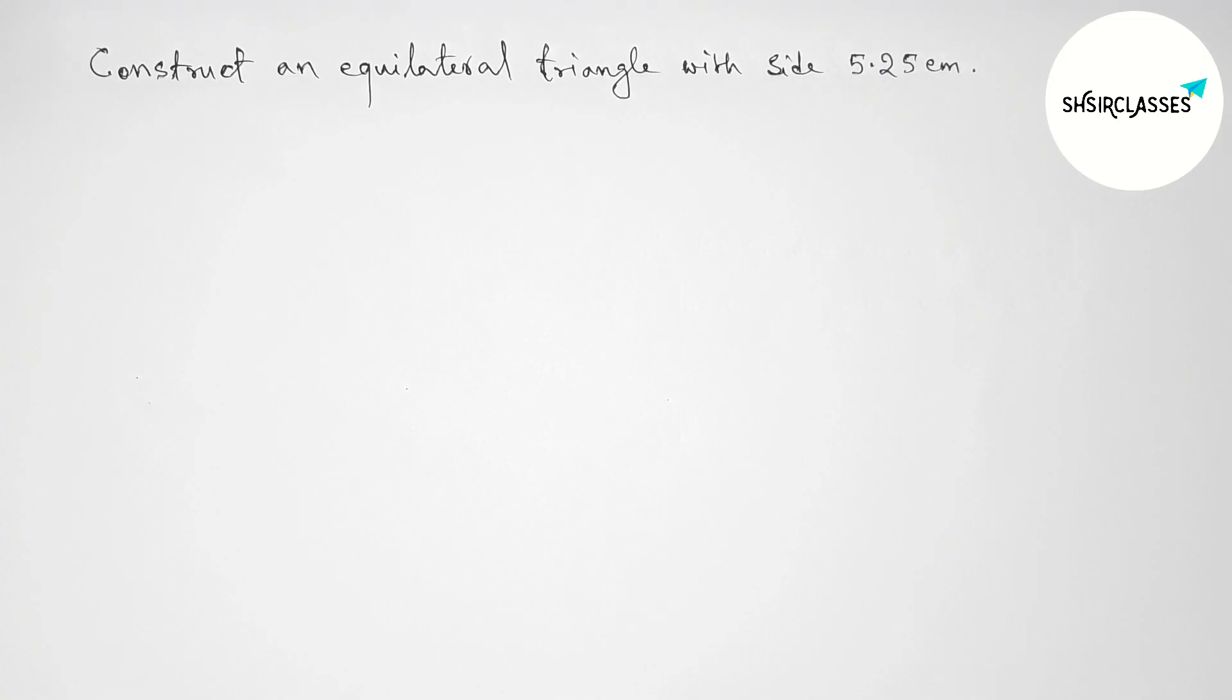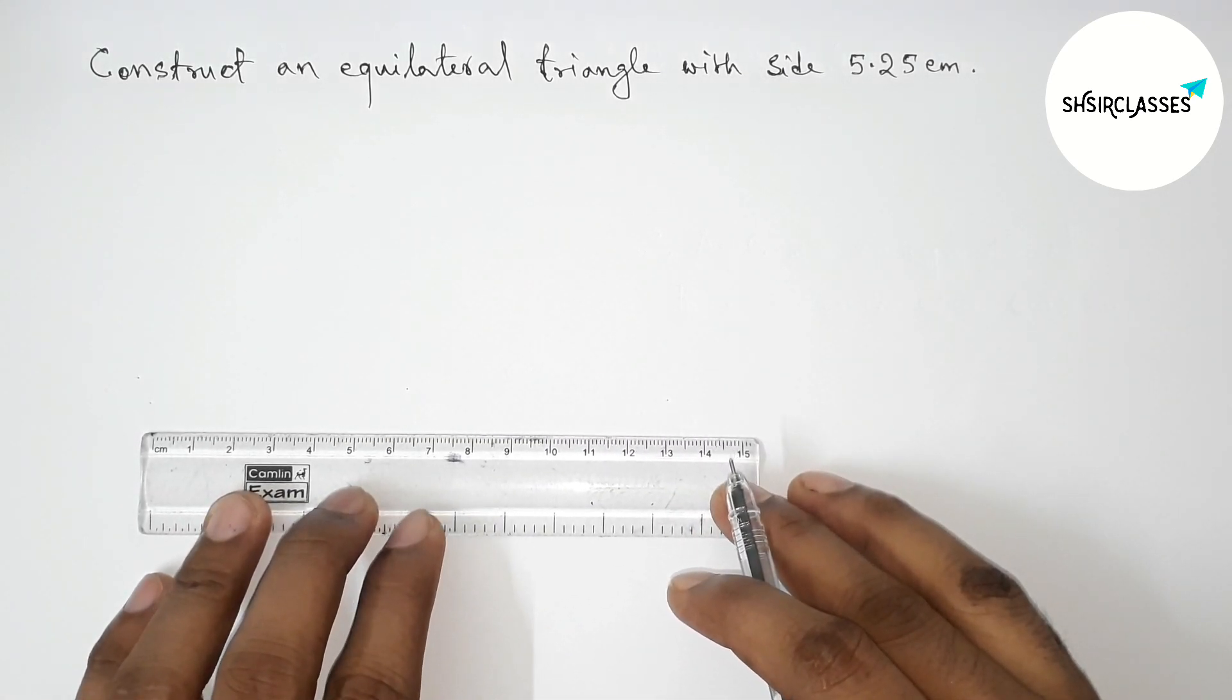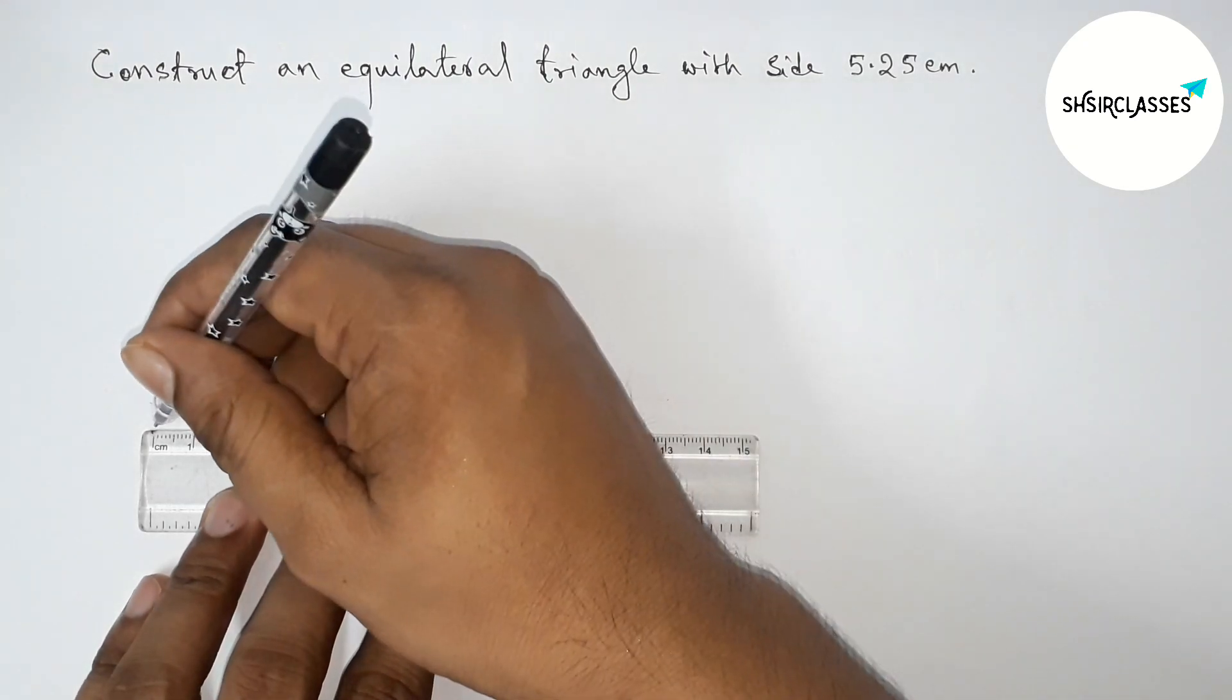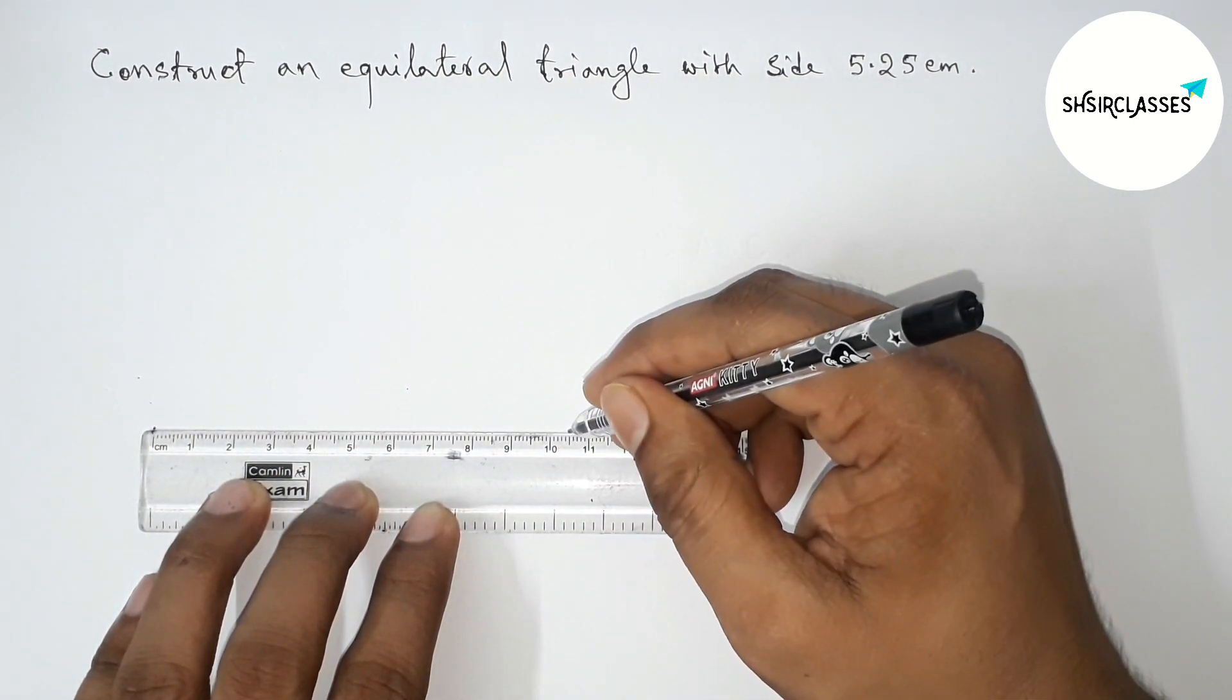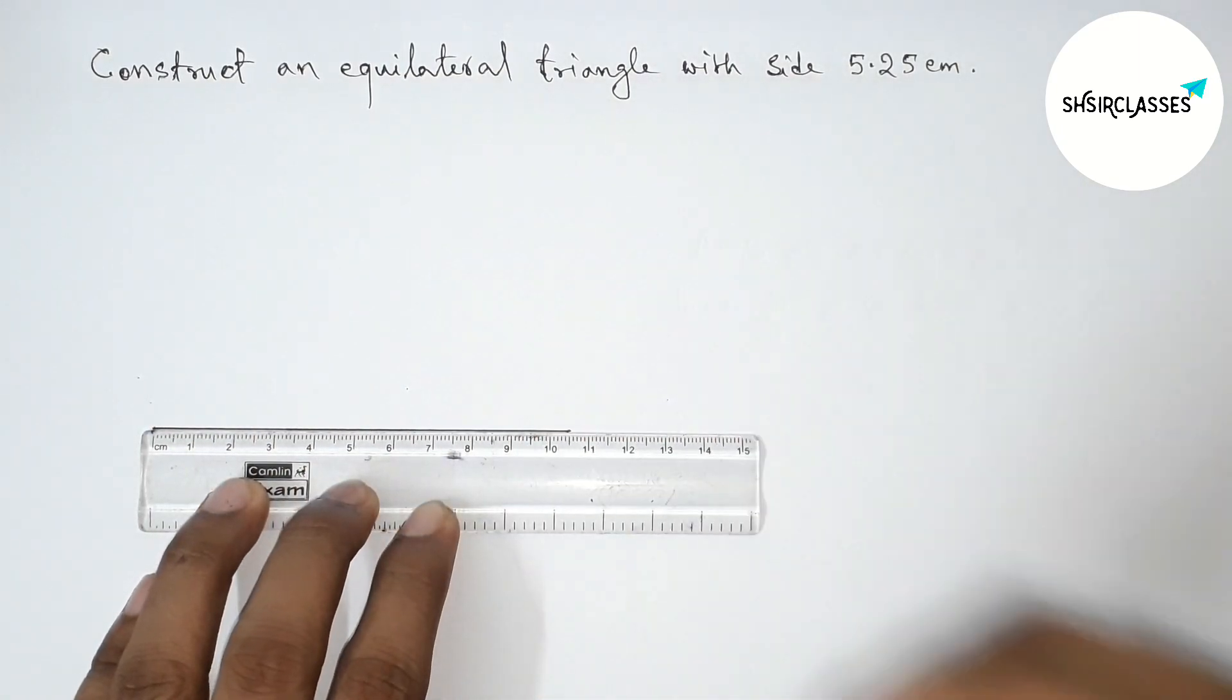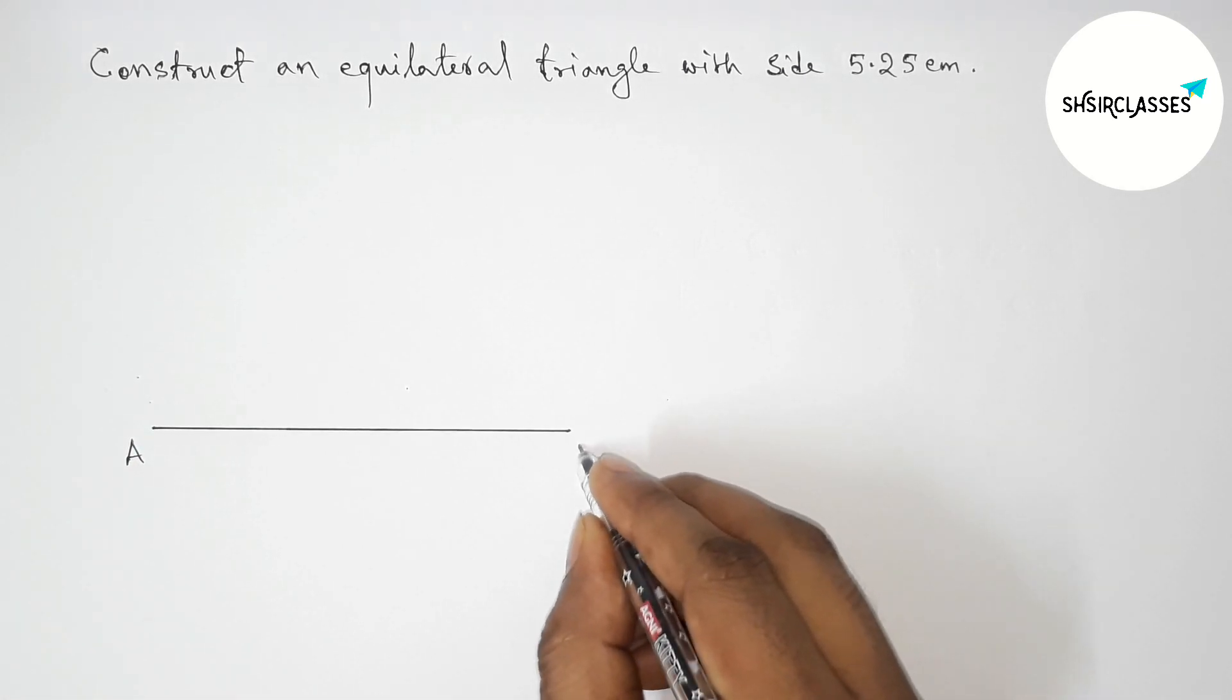Let us draw here a line segment of length 10.5 centimeters first. So now pointing out here, this is starting zero, then counting this is 10.5 centimeters. First drawing here a line segment.